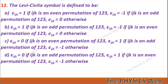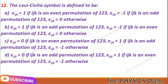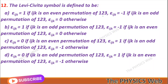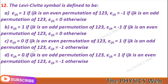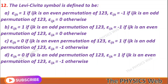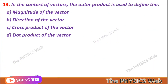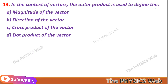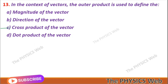Question 12: The Levi-Civita symbol is defined as: ε_ijk = 1 if ijk is an even permutation of 1,2,3; ε_ijk = −1 if ijk is an odd permutation; and ε_ijk = 0 if any two indices are equal — so A is your correct option. Question 13: In the context of vectors, the outer product is used to define the cross product of vectors — so C is your correct option.